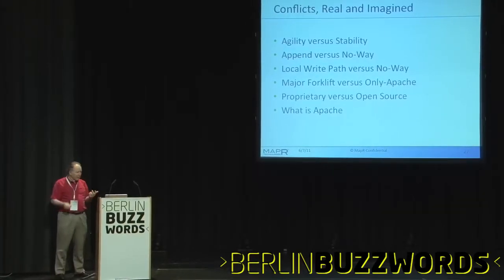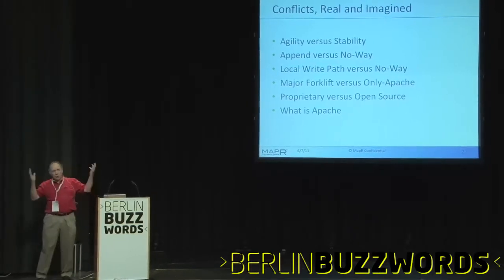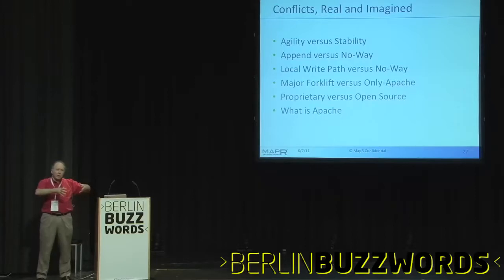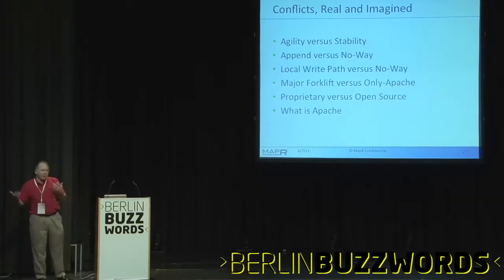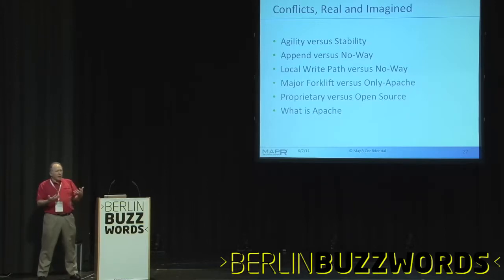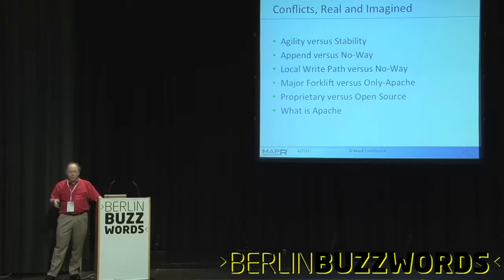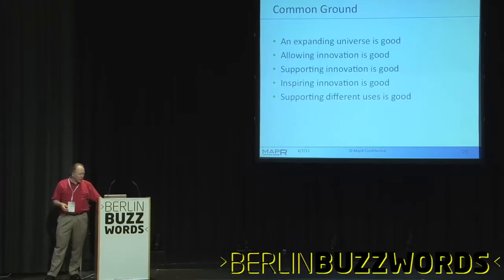The 'no way' guys are all worried about stability because they've been badly screwed in the past by major changes. Major forklifts — someone makes major changes. Is that Hadoopish or derivative? Other people are saying 'wait a minute, we're really important here, we're Apache.' They've contributed and things like that, but they kind of forgot that isn't the whole world. Proprietary versus open source — there's a conflict there. And what is Apache? Different people describe it different ways.